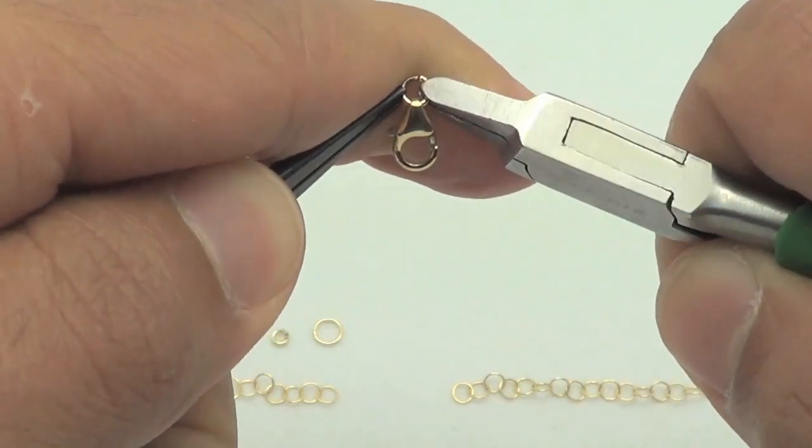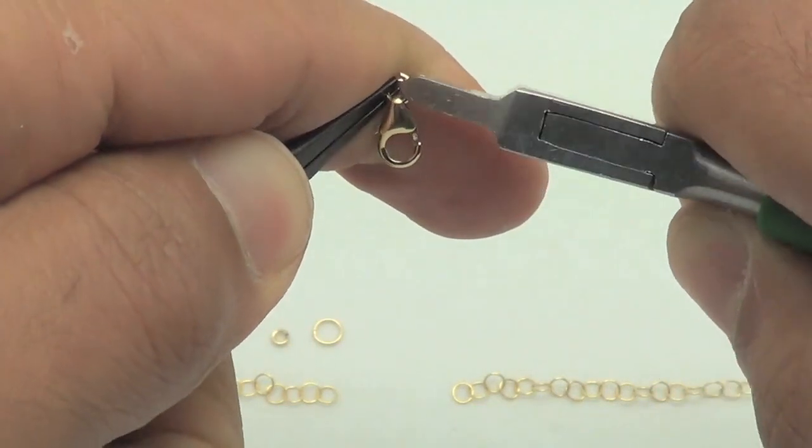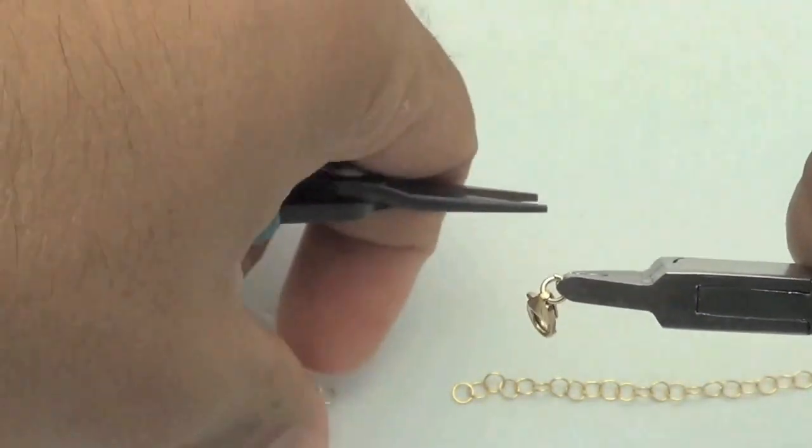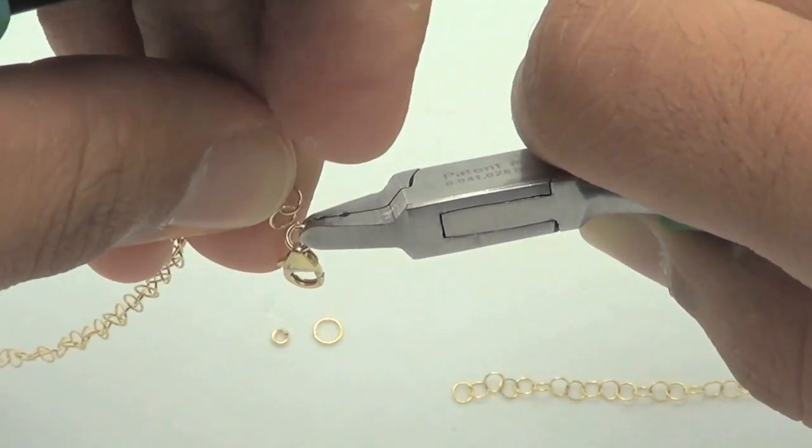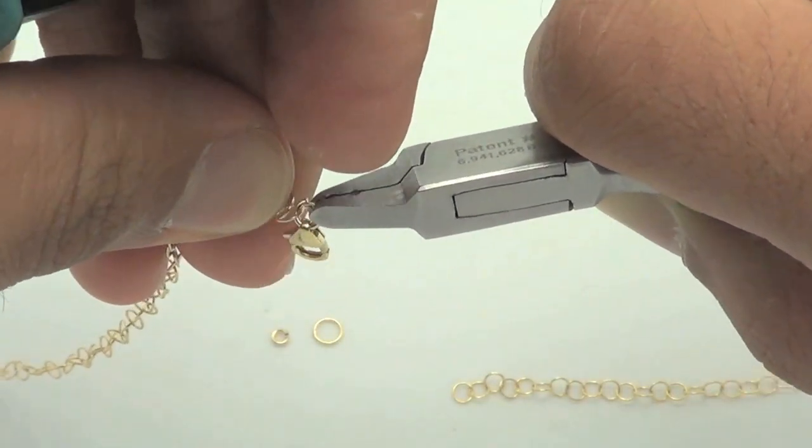Grab the other side of the jump ring with your other plier. Gently bend one side of the jump ring forward towards you and the other side away from you towards the ground. Don't open the jump ring outward toward your side or it won't close properly.